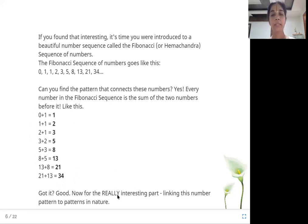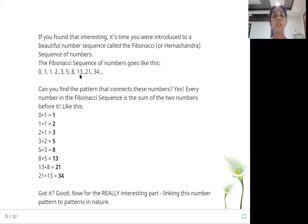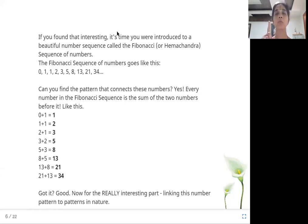The Fibonacci sequence: zero plus one is one, one plus one is two, one plus two is three, two plus three is five, three plus five is eight, five plus eight is thirteen. To get the next number, you add the previous two numbers. Try pausing the video and working the sequence on your own — try forming at least 20 numbers.